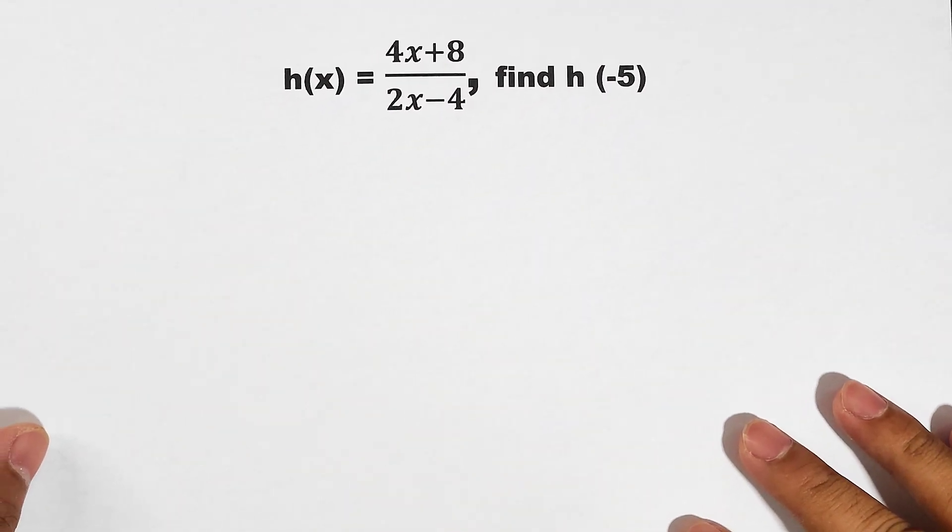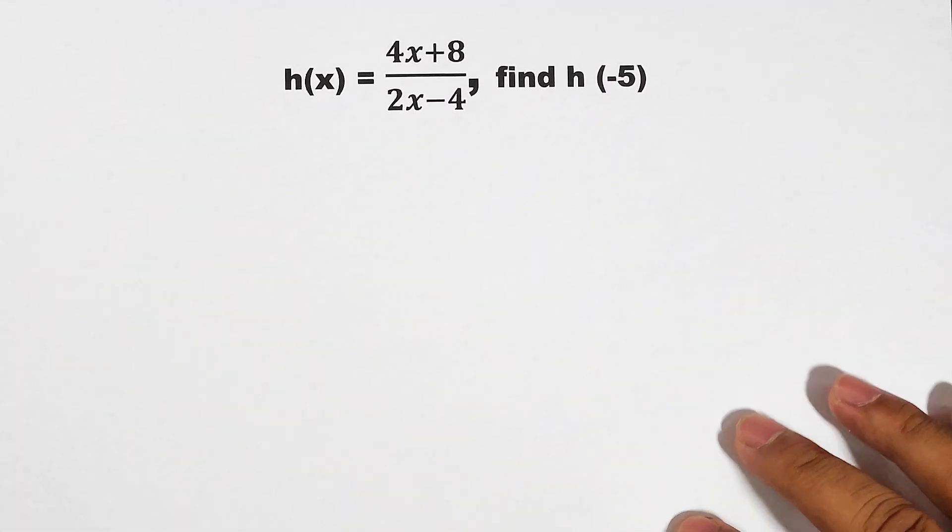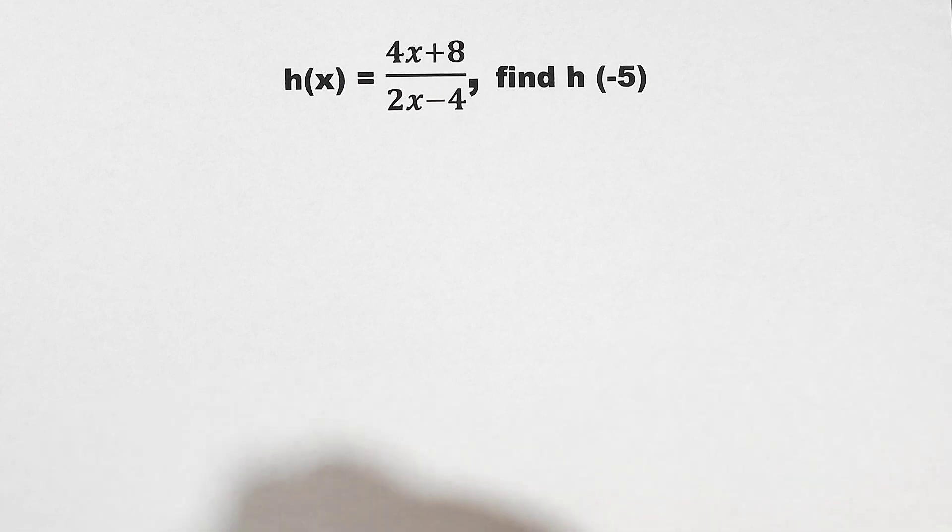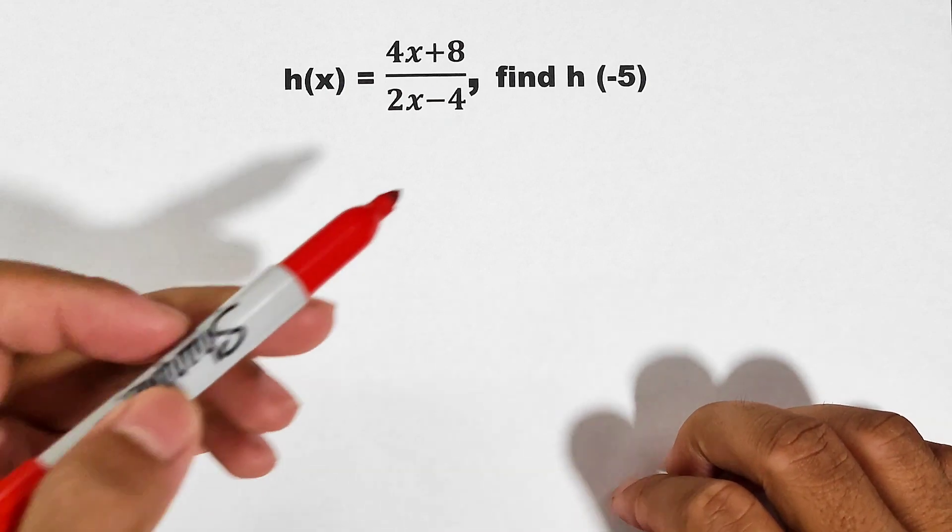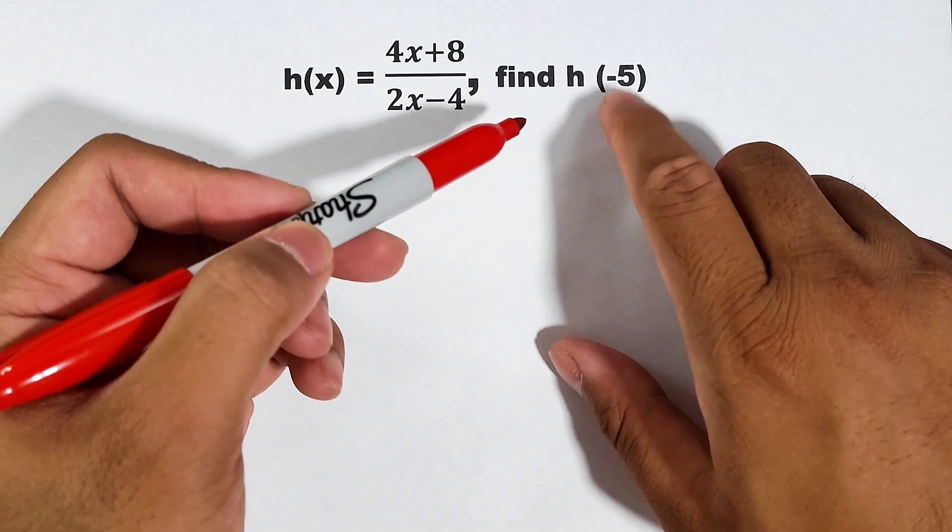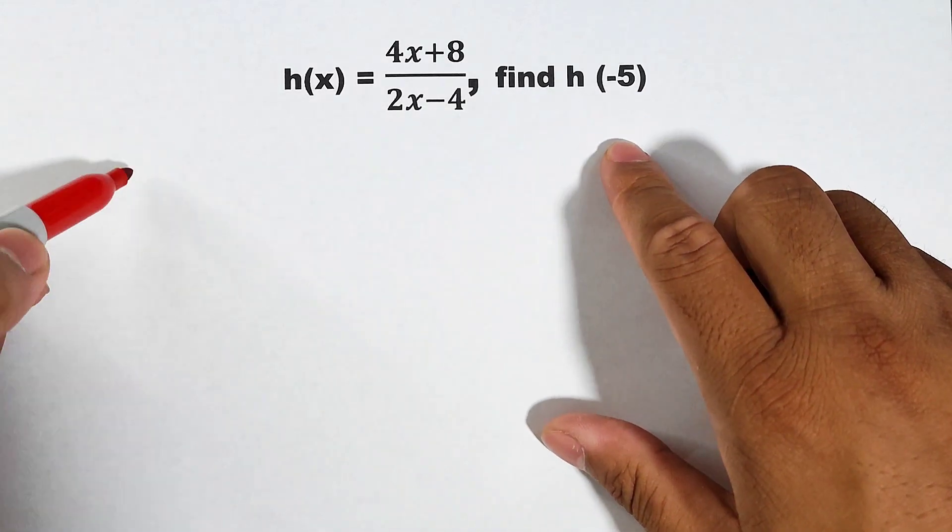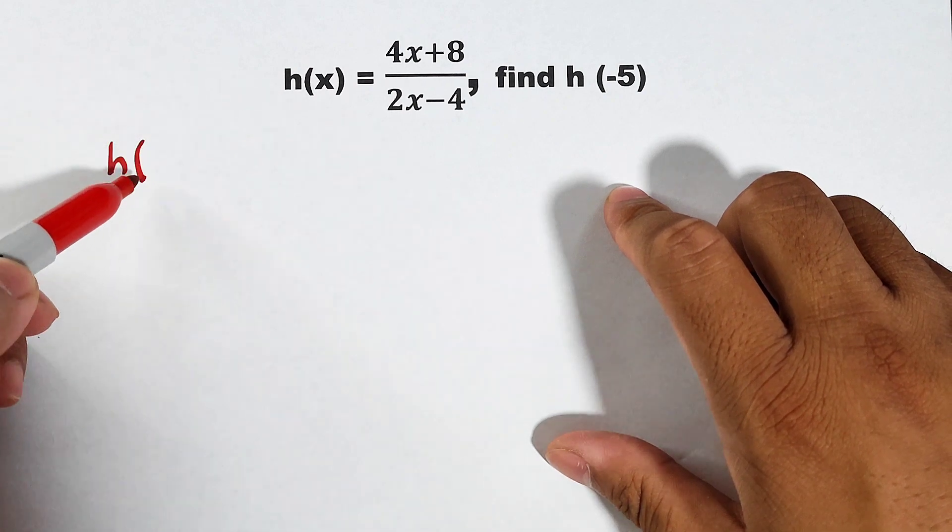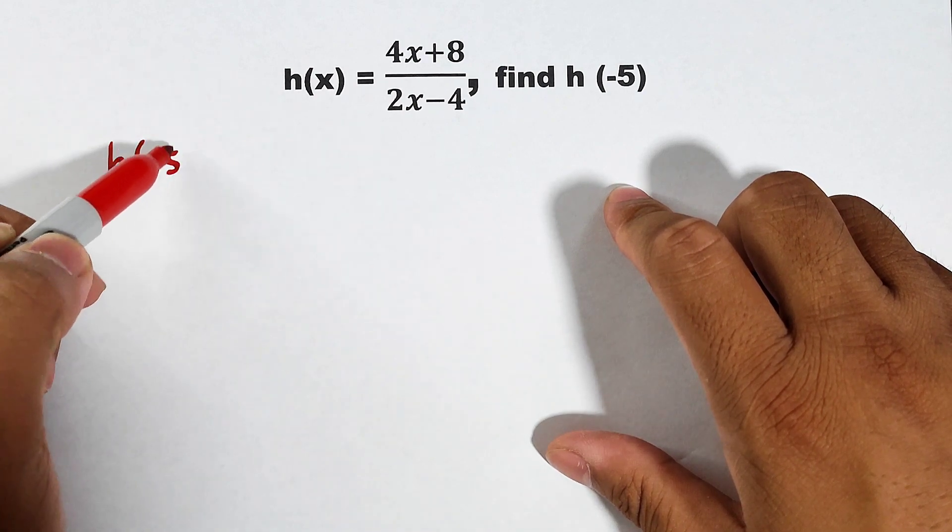This one is in a fractional form. And what we have now is function h. And we are asked to evaluate h of negative 5. This is our input. Let's start. We have h of negative 5.